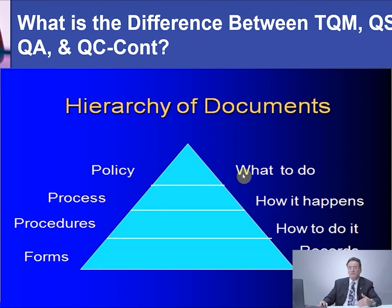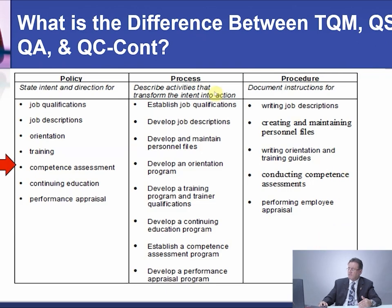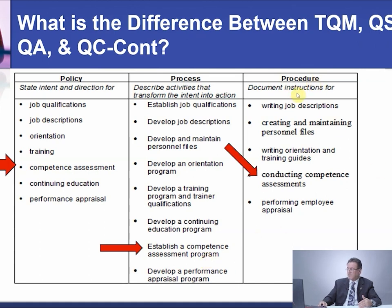Policy means what to do — when you write a policy, you write what to do. The process is how it happens. The procedure describes how you do it in your own laboratory. The form is what you use to record your actions. For example, if we decide to establish a competency assessment for our employees, the policy states the intent and direction, the process describes activities that transform intent into action, the procedure documents instructions for conducting the assessment, and the form is used to document the competency assessment for your staff.